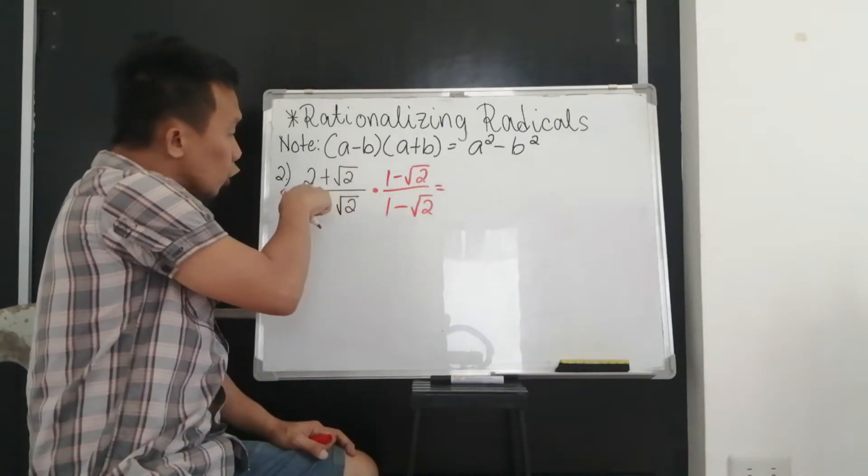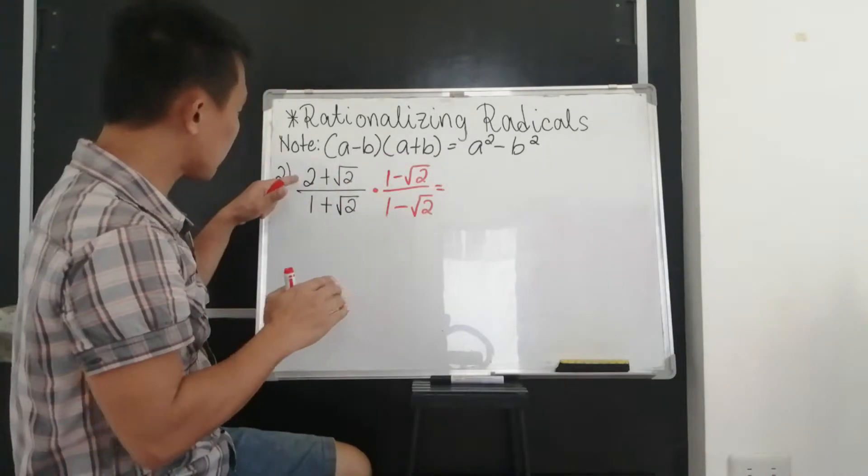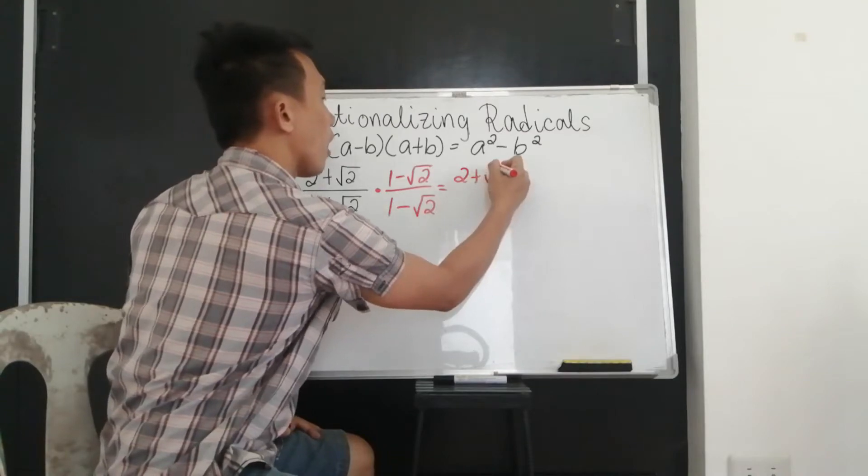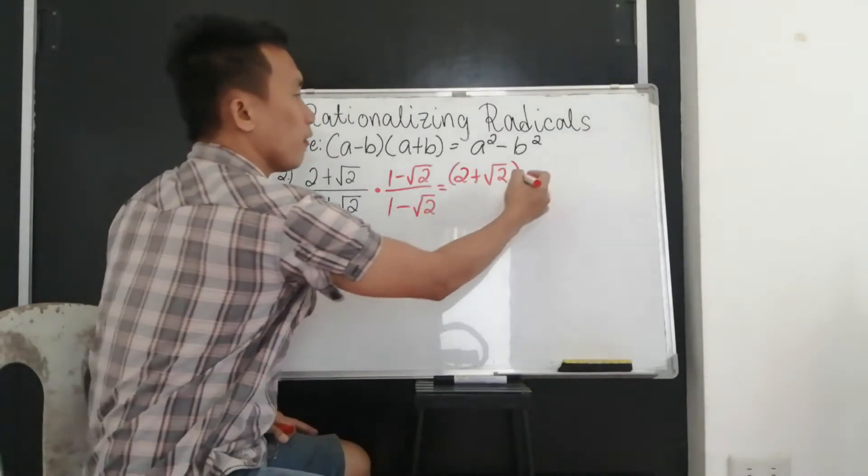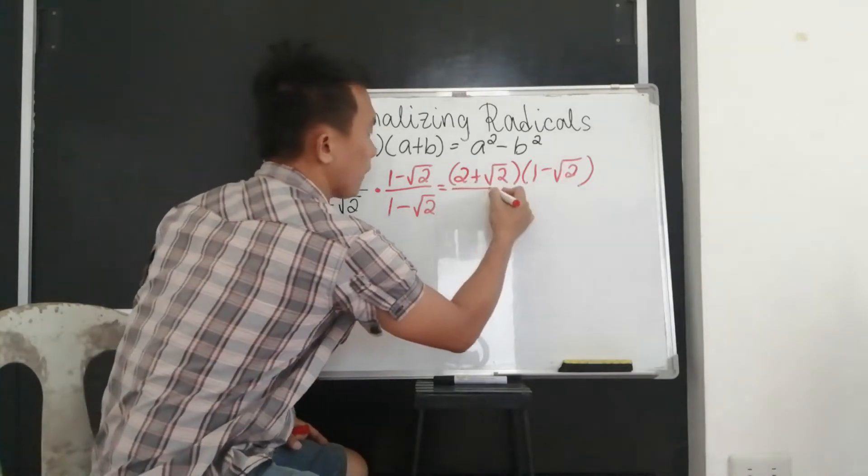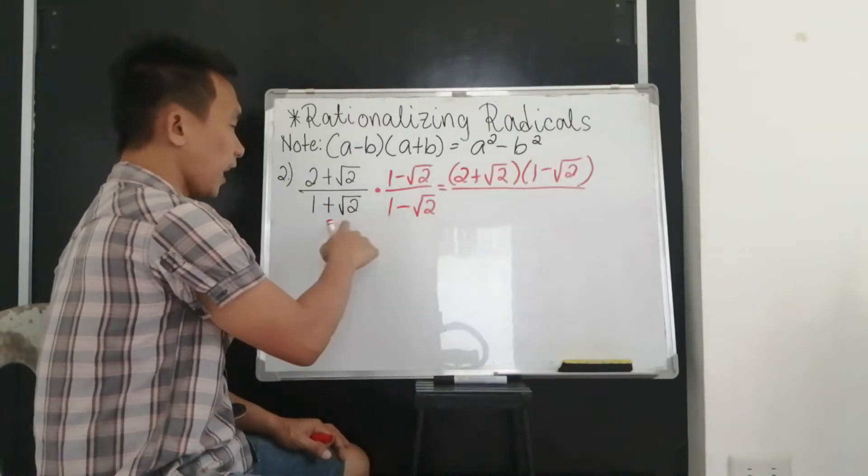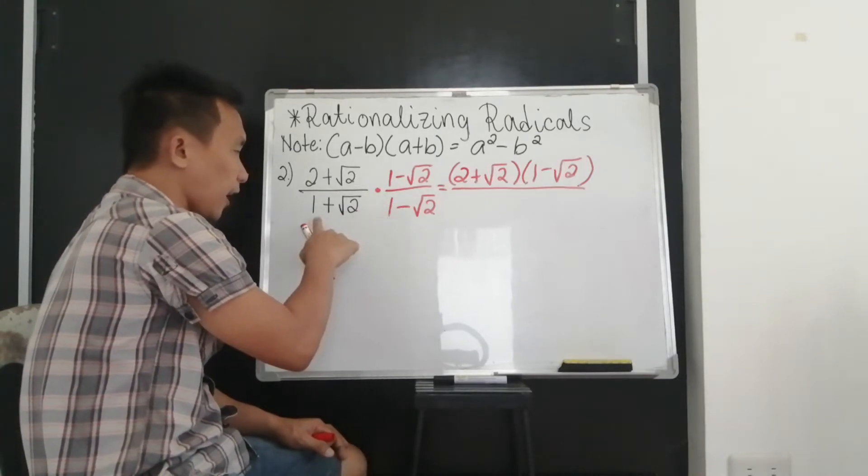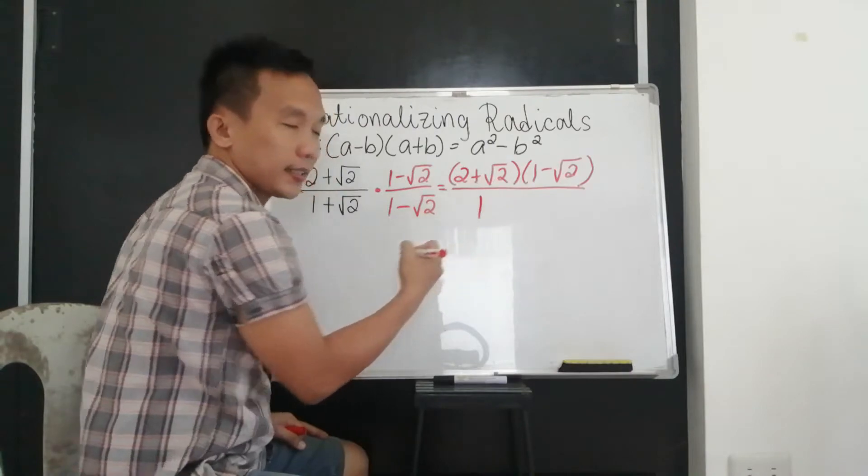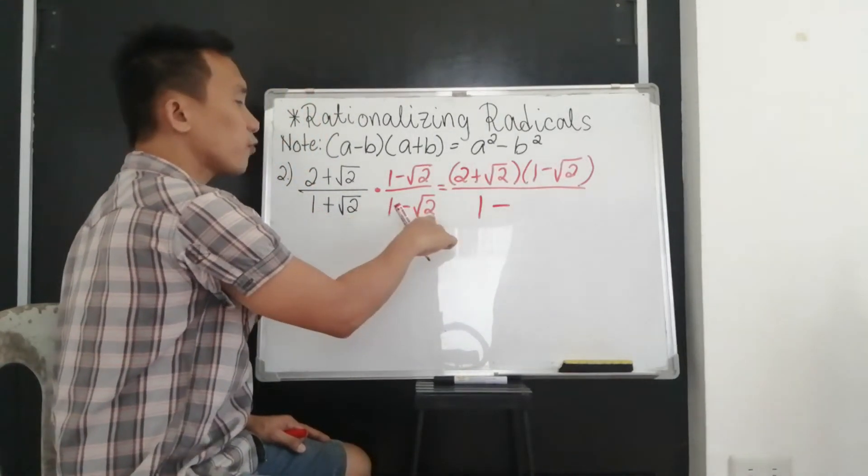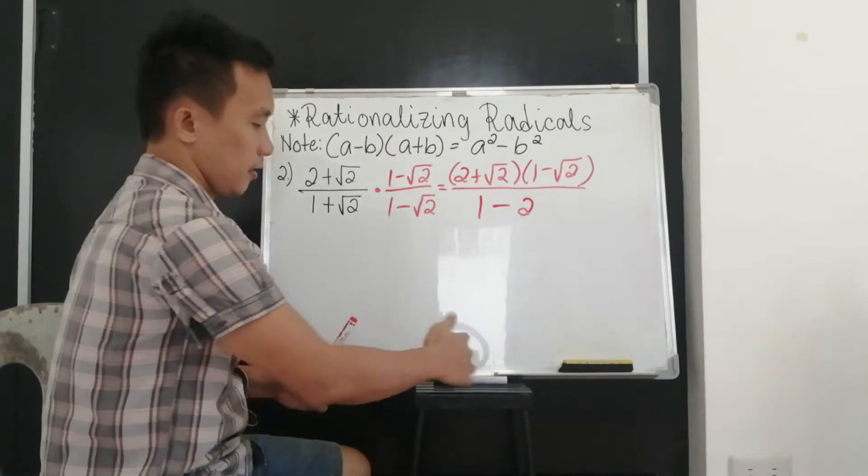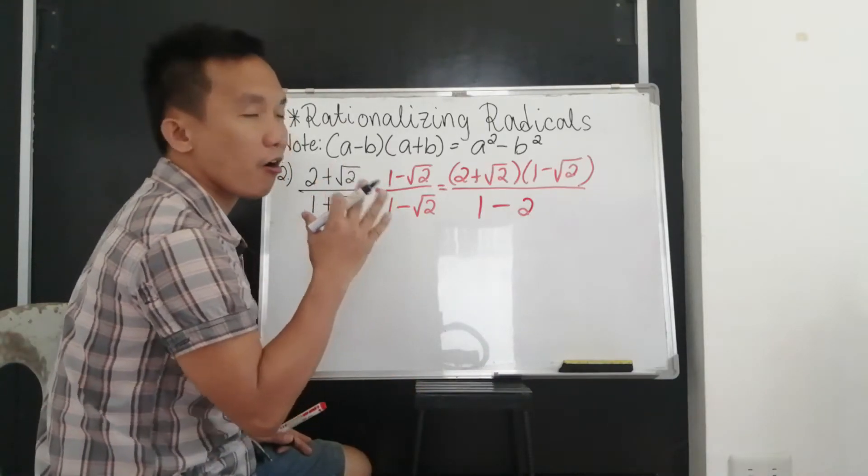So remember, we cannot use it in our numerator because 2 and 1 is different. So we will apply the multiplication of binomial using the foil method for our numerator. But in our denominator, since they are the same, this is minus only and plus, and your A is the same. So we can use the shortcut. So that's 1 times 1, that's 1, minus, then square root of 2 multiplied to square root of 2. It's just simply 2.